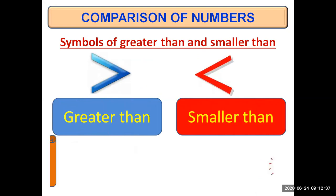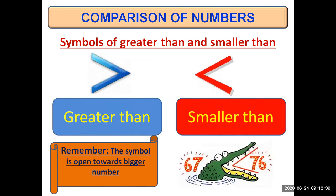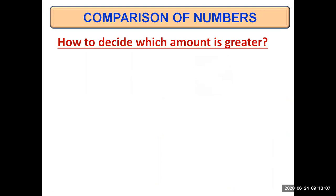Remember, the symbol is always open towards the bigger number. So if a number is opened towards left, that means the amount at the left is greater than the amount at the right of the symbol. But if that symbol is opened towards right, it means the amount at the left is smaller than the amount at the right. But how to decide which amount is greater?